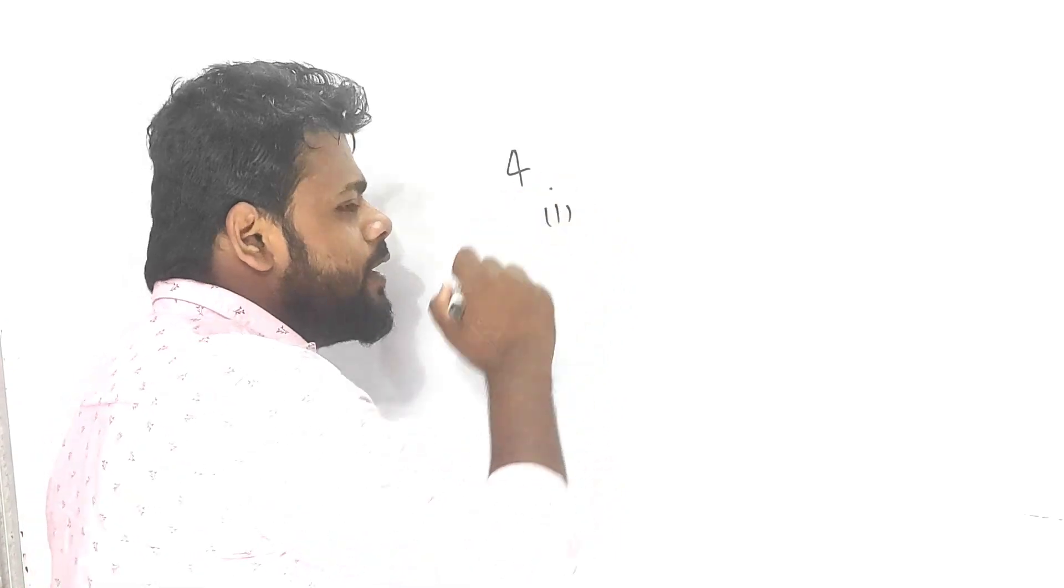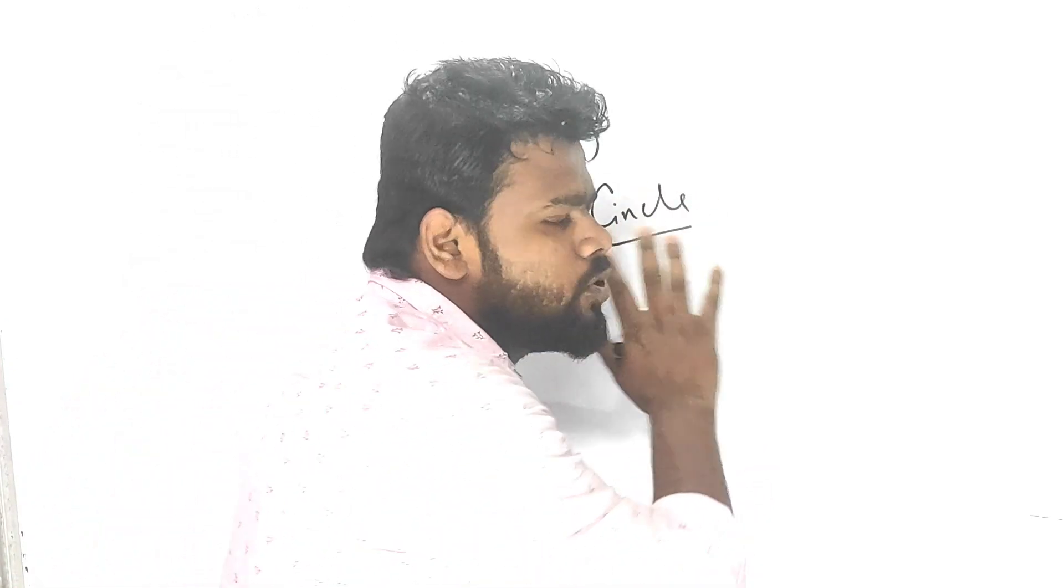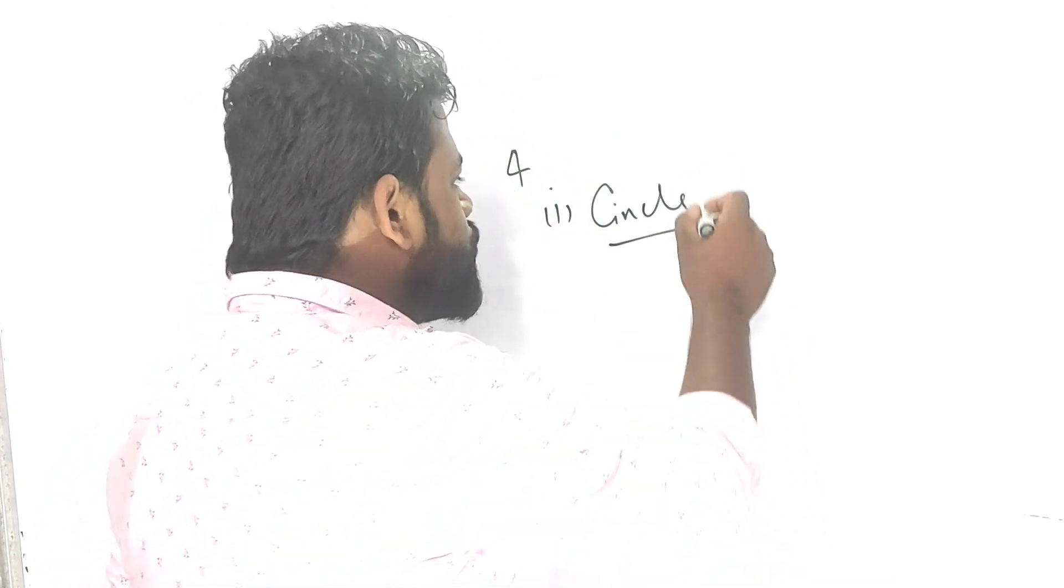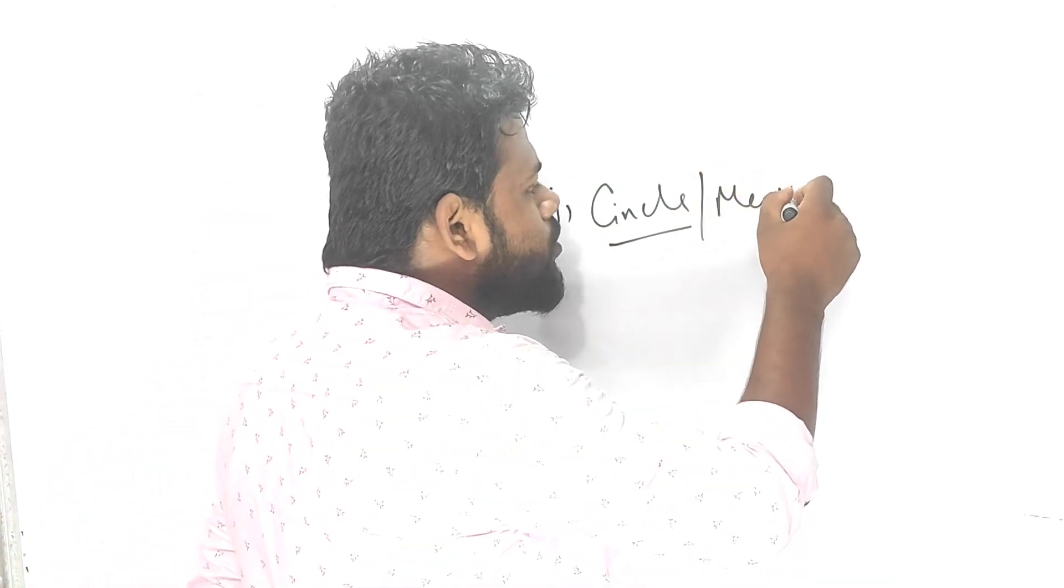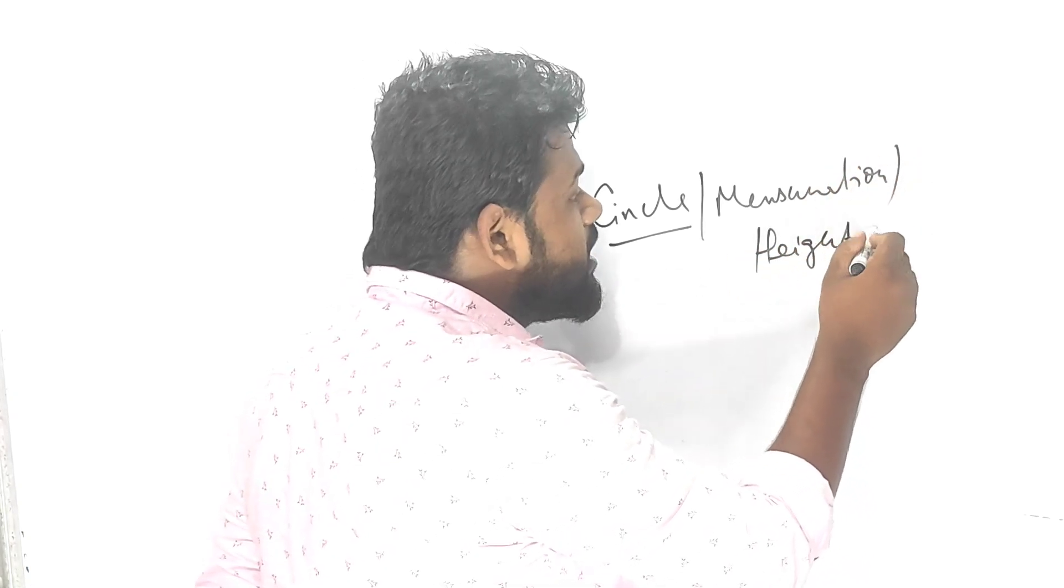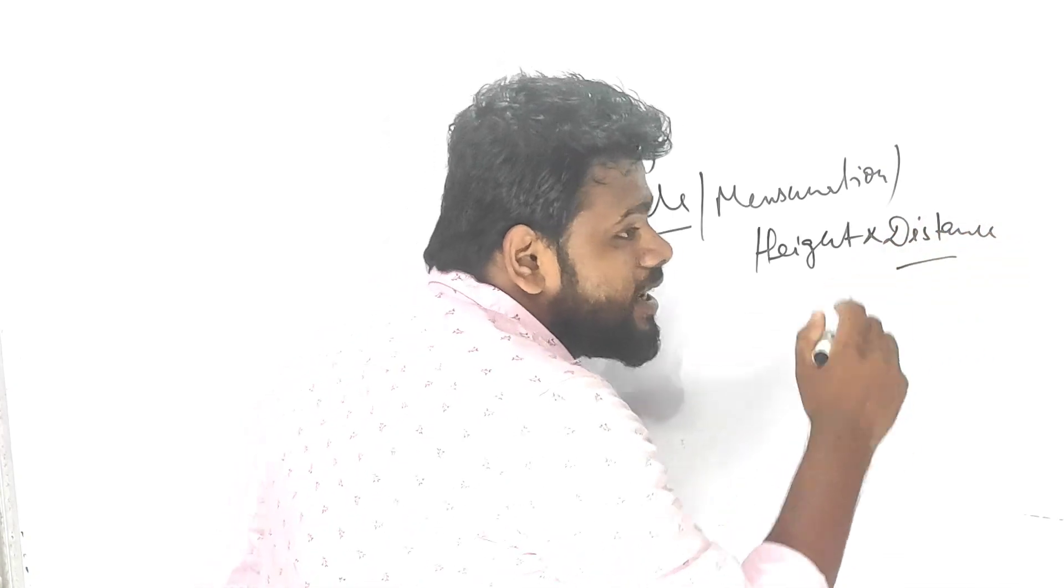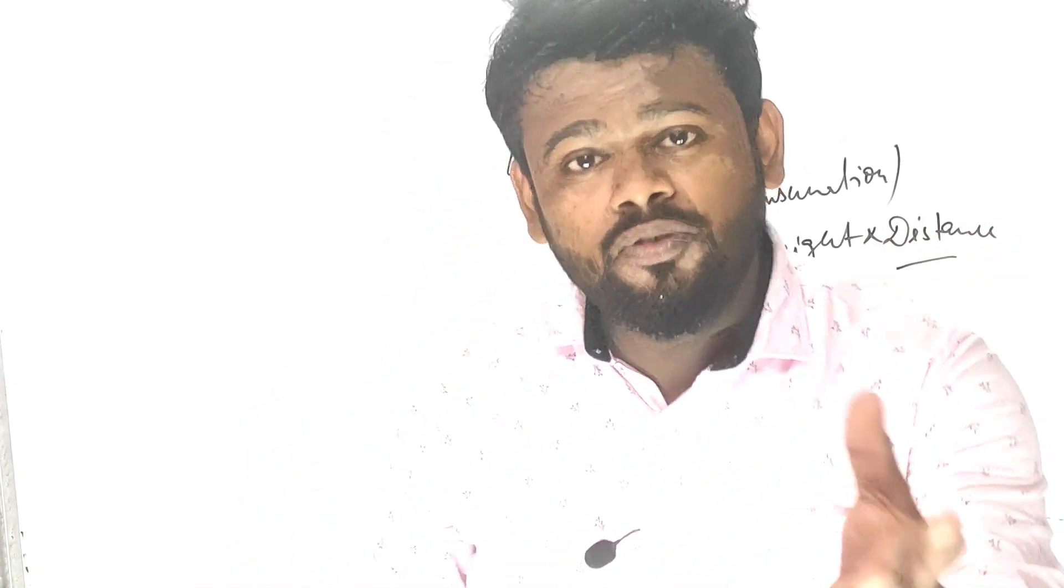Suppose for example question number 4b1, whichever circle question is there and you don't know that particular question. For example, mensuration is there, or height and distance is there, and you don't know the question, but still you can get marks. I will be letting you know how you can get the marks.